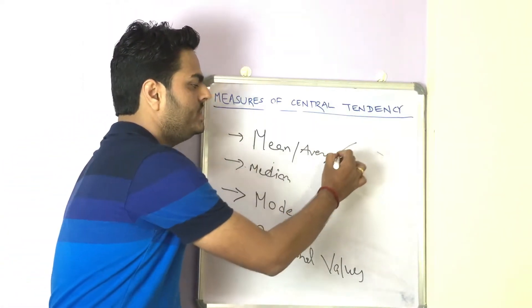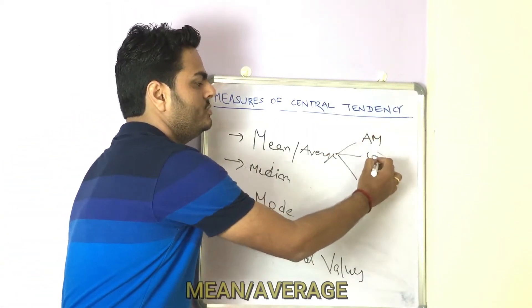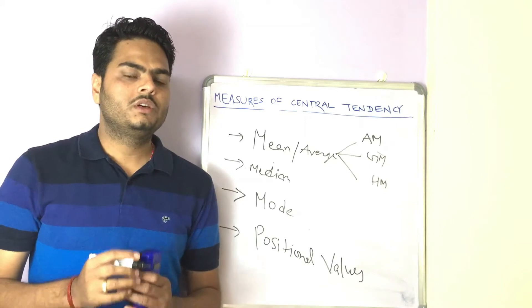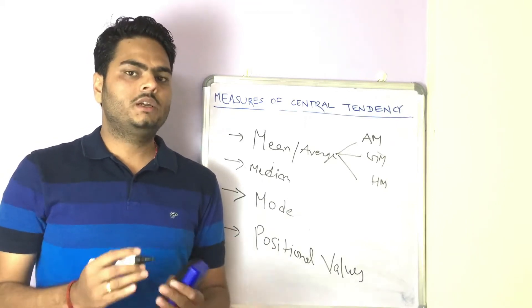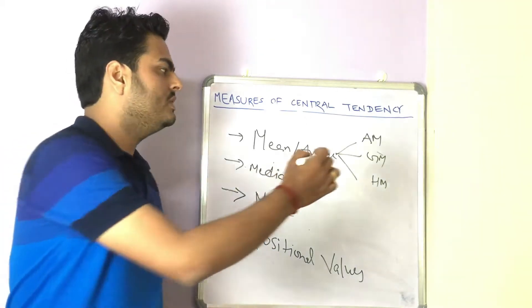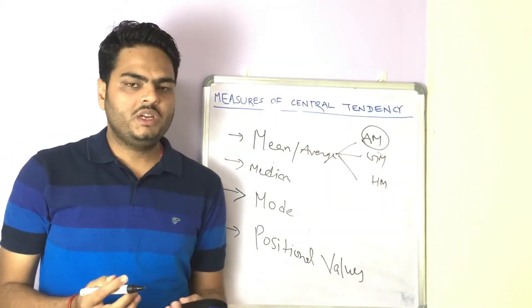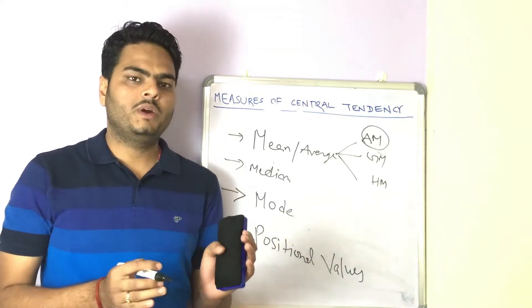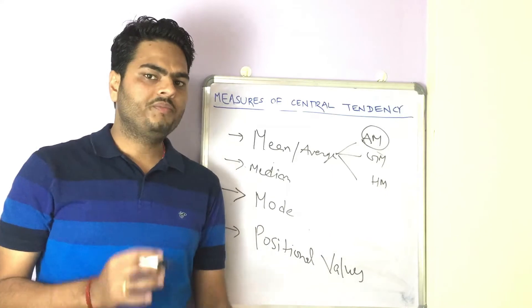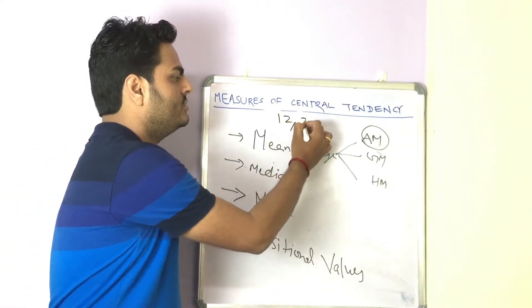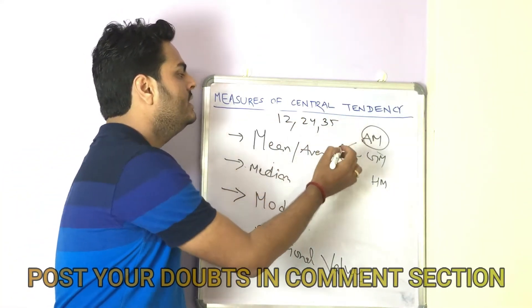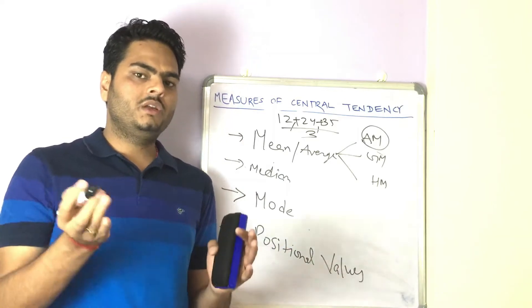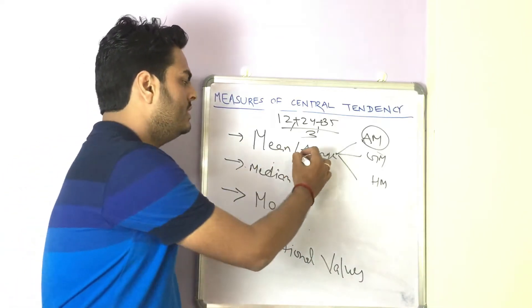Mean typically falls in three categories: arithmetic mean, geometric mean, and harmonic mean. In the world of data science, since we deal with all numbers — discrete numbers case by case — we mostly work with arithmetic mean. Arithmetic mean is very simple: if I give you n numbers, you sum all the numbers and divide by n. That gives you the mean. For example, the average of 12, 24, and 35 — you just sum them and divide by 3. Sum everything divided by the population count gives you the mean.